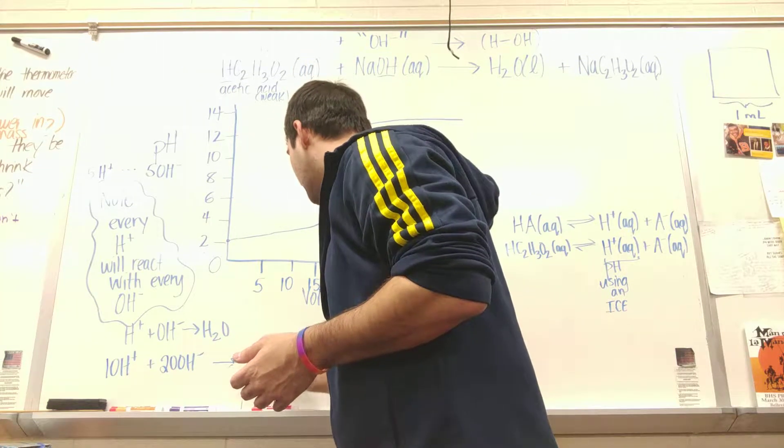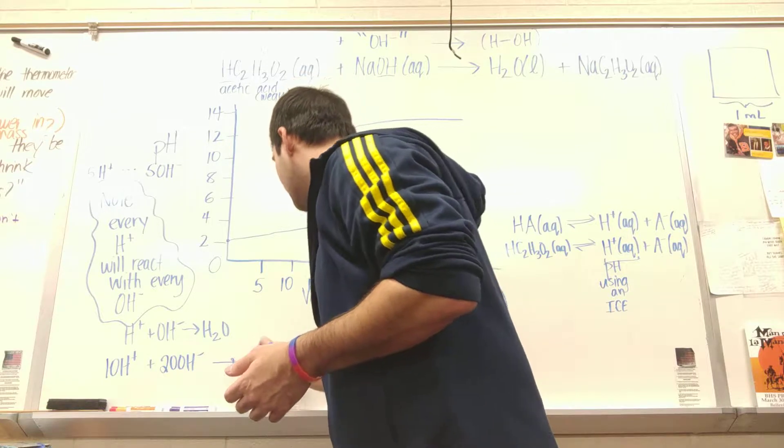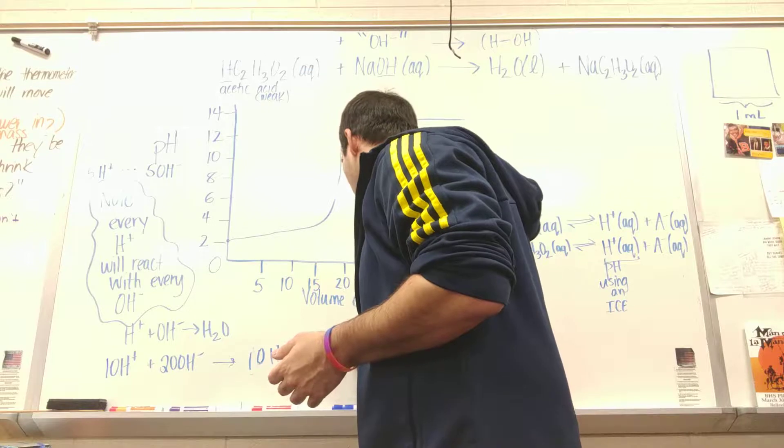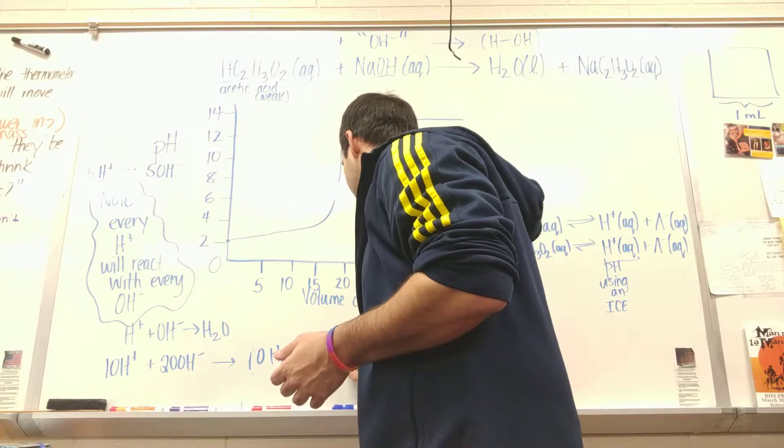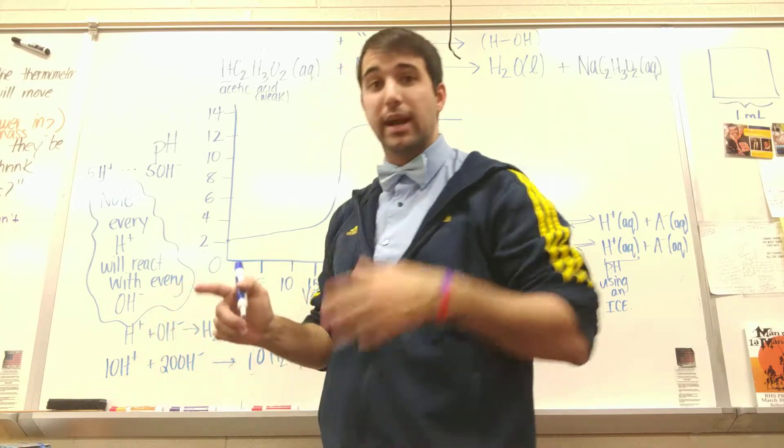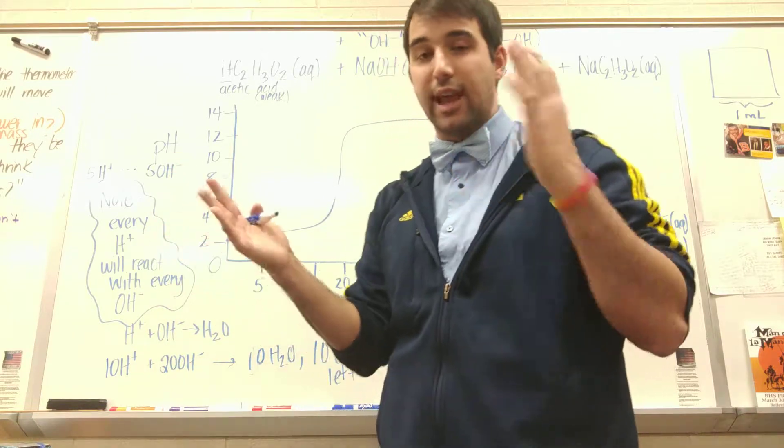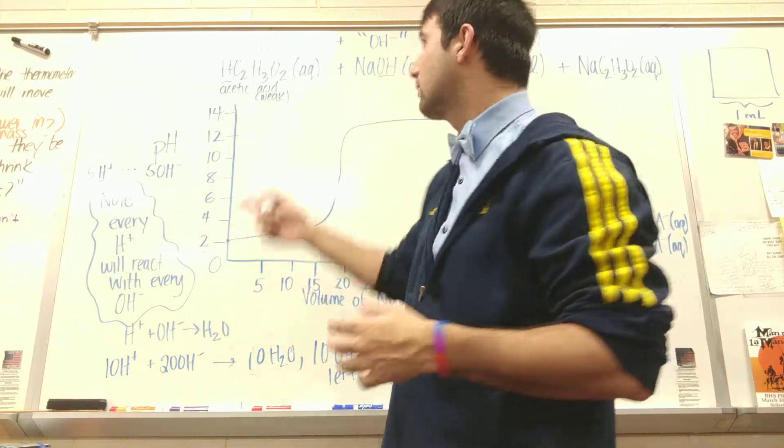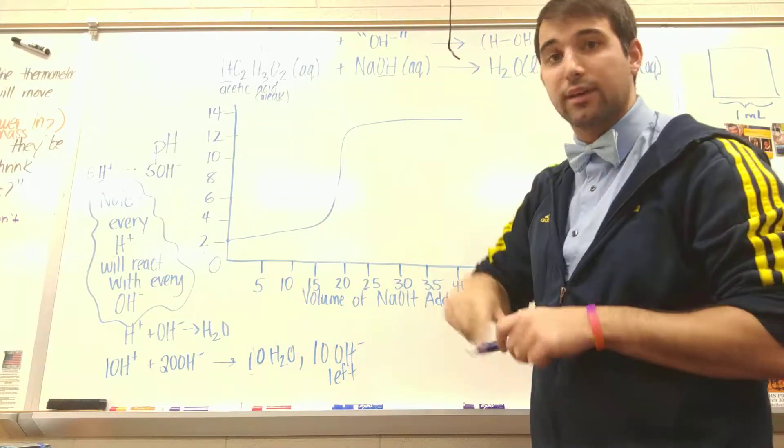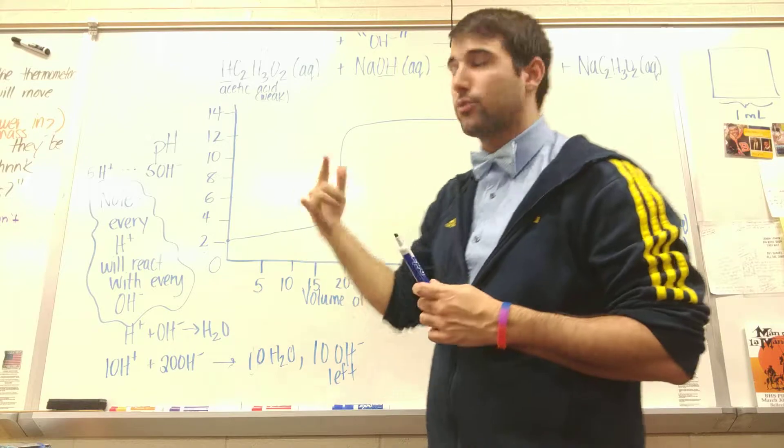So I'll get 10 H2Os and then I'll have ten OH- left. And that's because if I add H+ to OH-, H and OH, I don't know if you knew this, H and OH is water. That is why in an acid-base reaction, I get water as a product.